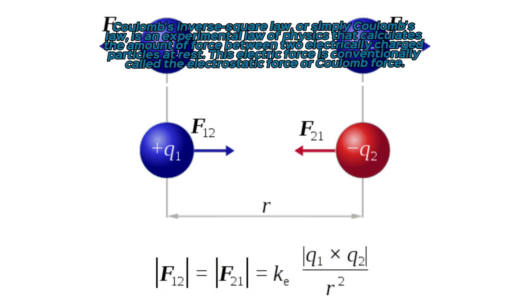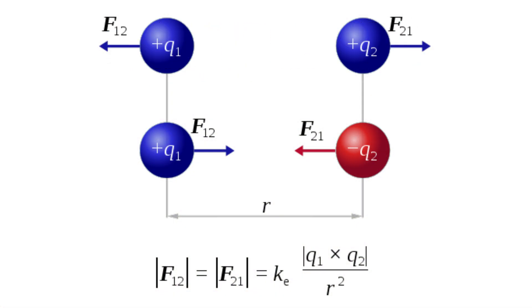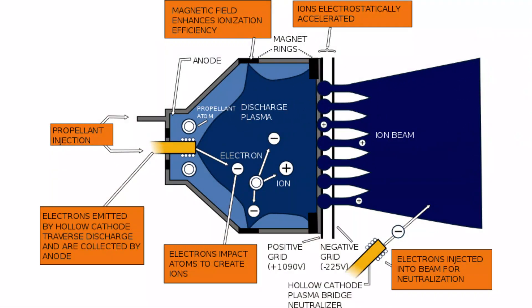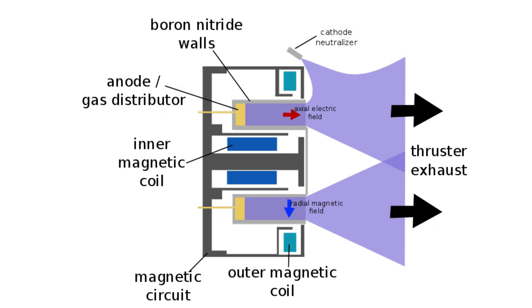Temporarily stored electrons are re-injected by a neutralizer in the cloud of ions after it has passed through the electrostatic grid, so the gas becomes neutral again and can freely disperse in space without any further electrical interaction with the thruster.